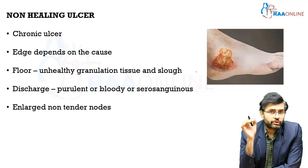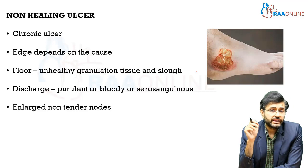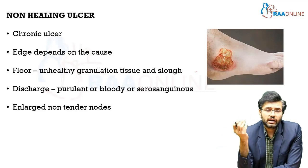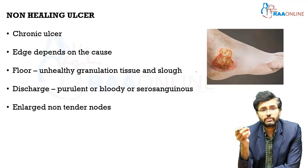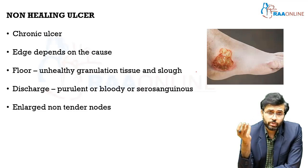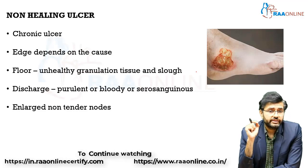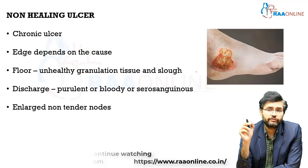If adequate intervention is not provided or the underlying condition is not treated, we arrive at the third type: a non-healing ulcer, which is classically a chronic ulcer. The edges depend upon the underlying cause — punched out, undermined, protruding, or beaded. The floor characteristically has unhealthy granulation tissue with slough. Discharge can be purulent, bloody, or serosanguineous. There will be enlarged non-tender regional lymph nodes. This image shows a classic example of a non-healing ulcer.